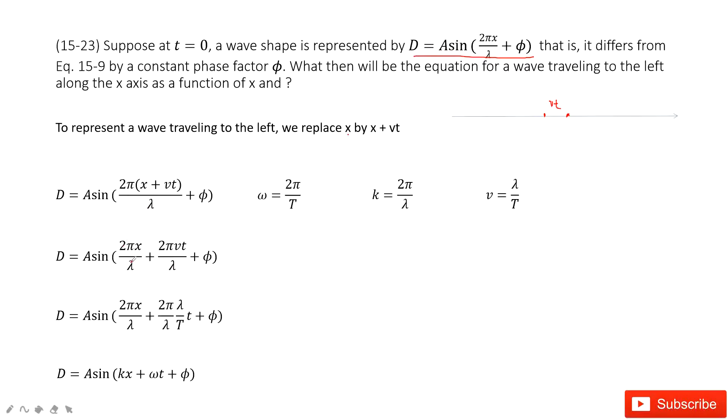So we have 2 pi x divided by lambda, plus 2 pi v t divided by lambda, plus phi, the phase difference. Now we can see 2 pi divided by lambda, that is the wave number.